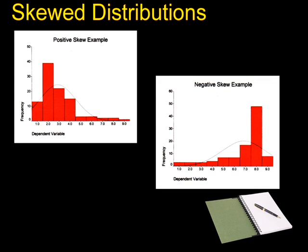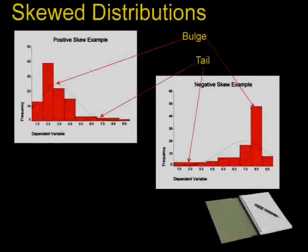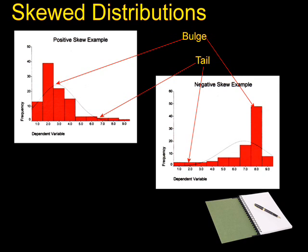Then we have skewed distributions. Skewed distributions happen when most scores are either high or low, with a small percentage of scores being strung out in one direction away from the majority of scores. A distribution is said to be positively skewed if the tail of the distribution points toward the upper end of the score continuum. The curve is said to be negatively skewed if the tail points to the lower end.